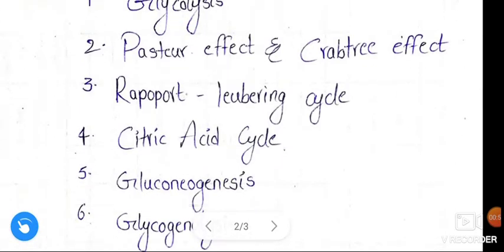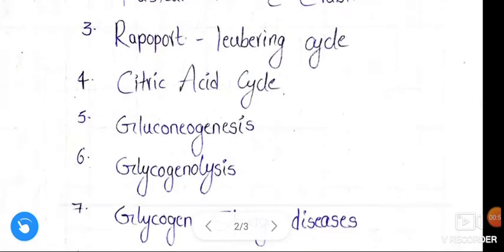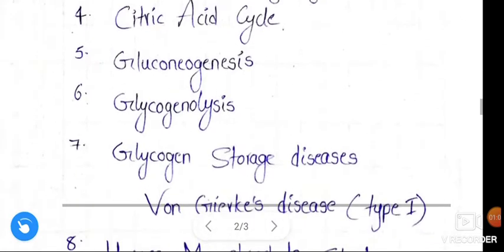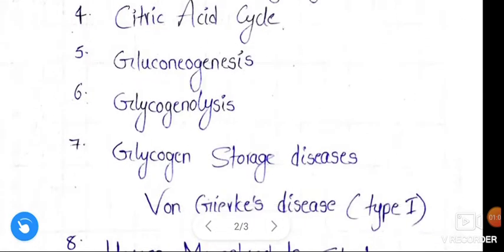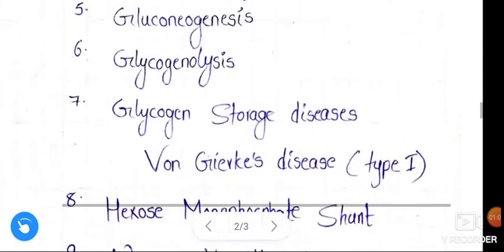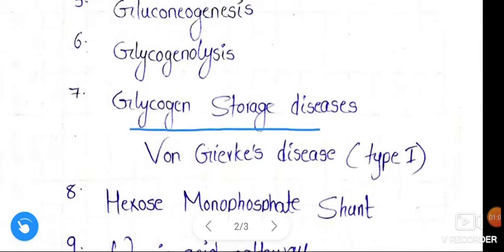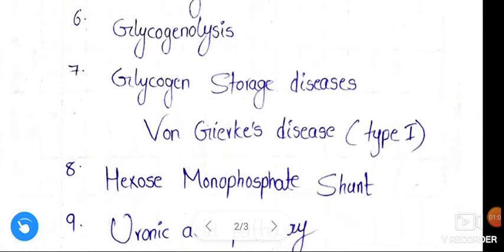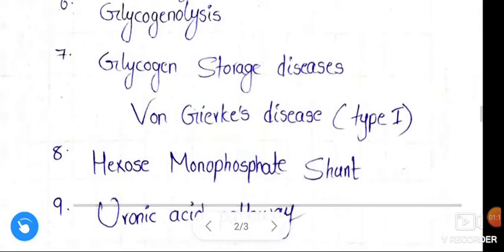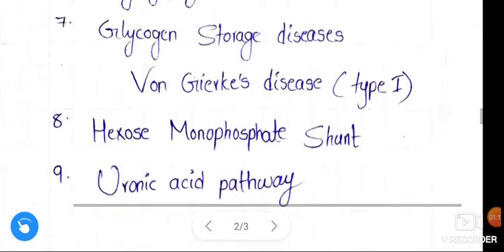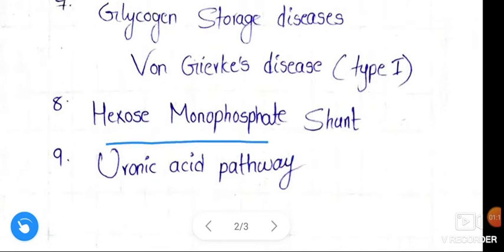Pasteur effect, Crabtree effect, Rapoport-Luebering cycle, citric acid cycle, gluconeogenesis, glycogenolysis, and glycogen storage disease. Under this, Girke's disease type 1, hexose monophosphate shunt, and uronic acid pathway.